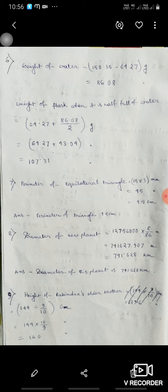Diameter of new planet. So 127,560 into 5 upon 86, that you will get 7,416.28 kilometer.